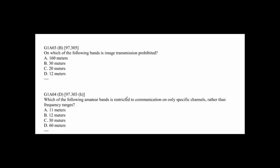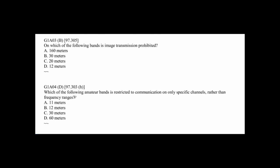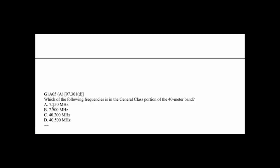G1A04: Which of the following amateur bands is restricted to communications on only specific channels rather than frequency ranges? And that is 60 meters — a different band from all the rest, but again that's one you'll probably have to memorize unless you've been on the air a lot. G1A05: Which of the following frequencies is the general class portion of the 40 meter band? 40 meters is 7 MHz, so C and D can be eliminated. Answer B is beyond 40 meters, leaving us with just A as the correct answer: 7.250.